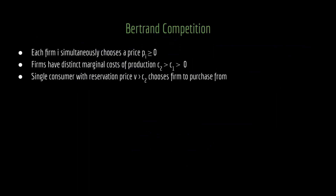We're studying a standard model of Bertrand competition with one modification. We're still having the firms competing on price, so each firm is simultaneously choosing a price P. The difference here is that the firms have distinct marginal costs of production. In the past, we've assumed that the firms were symmetric, so they had identical marginal costs. Here, without loss of generality, we're going to assume that firm 2 has a larger marginal cost of production, so C2 is larger than C1.